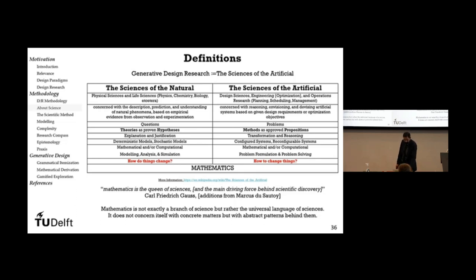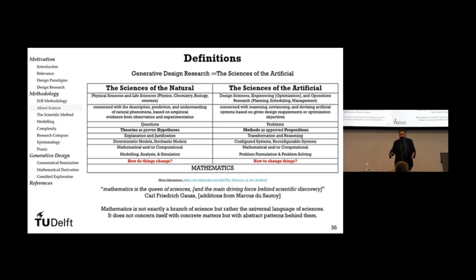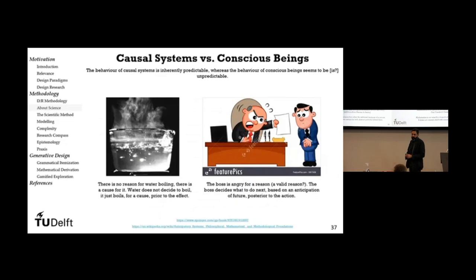Simon has won a Nobel Prize in economics. His definition of design is very appealing: any business concerned with changing the status quo toward better states can be called some kind of design. He argues for developing design sciences — how do we know we are moving in the right direction and that our decisions will have the right impact?